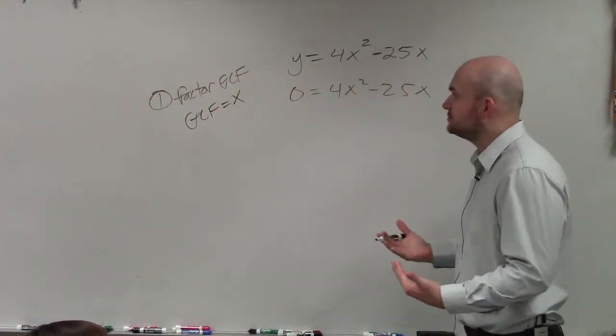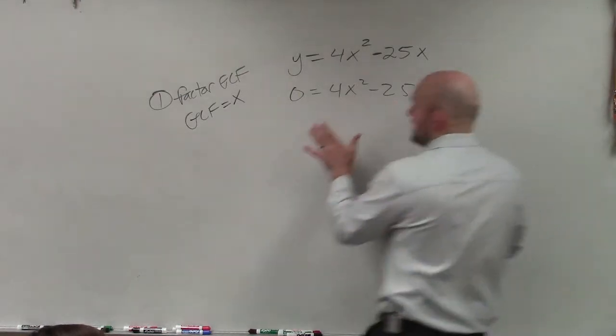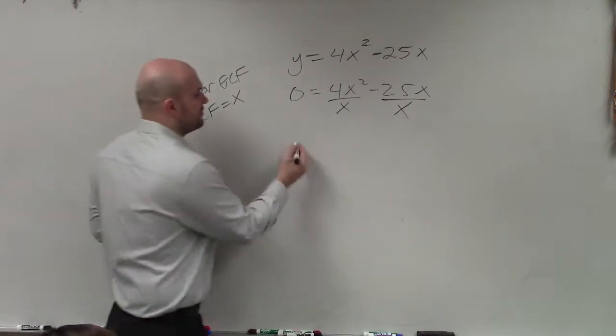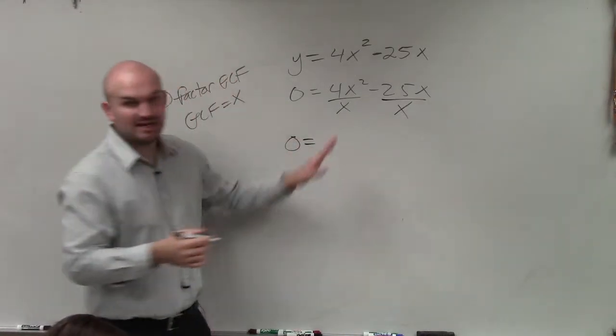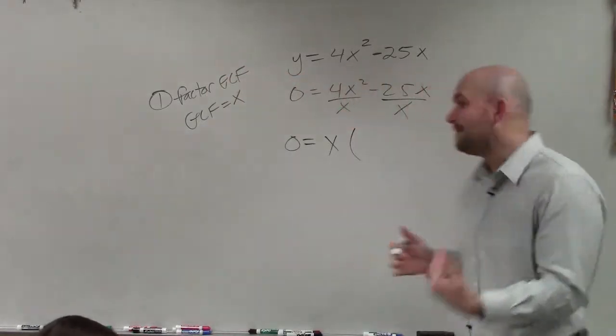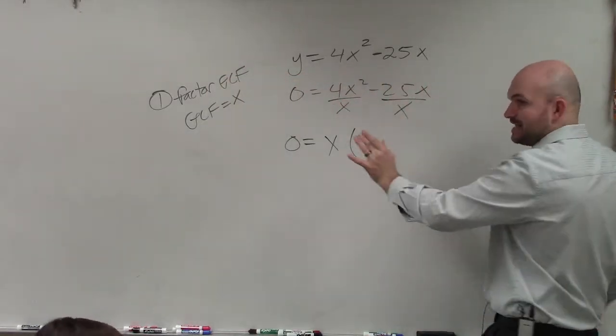And basically, what we're going to do is we're going to divide both of our terms by our GCF. So therefore, we take our GCF, and we write it on the outside. And then we take, well, what happens when we divide both terms by our GCF?